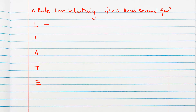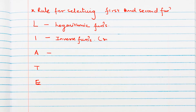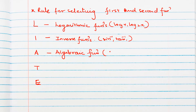L stands for logarithmic function. I stands for inverse functions — like sine inverse, tan inverse. A stands for algebraic function, which means x, x squared, 3x plus 2, x cubed — all these are algebraic functions.